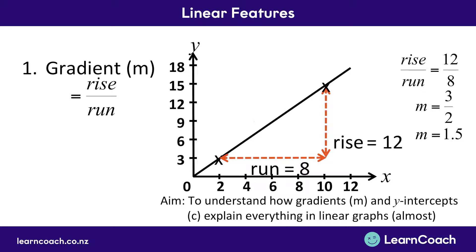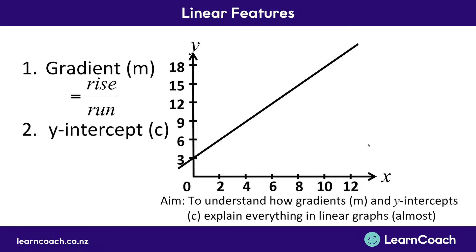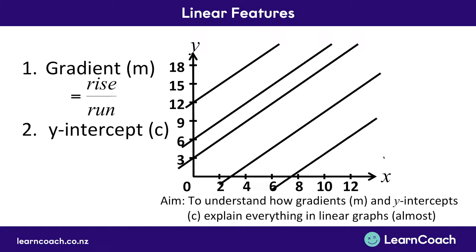Hopefully you now understand how to work out the slope. Remember, a bigger number means steeper, a smaller number means more shallow, and a negative number means pointing downwards. Now let's look at the only other thing which can change in a graph. The graph might move up or down while keeping the same slope. We measure this using our y-intercept, which is where these lines cross our y-axis — more specifically, where the lines intercept the y-axis.